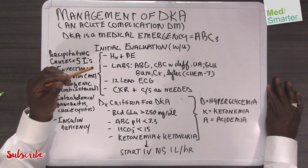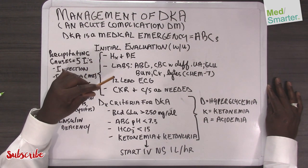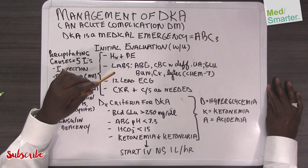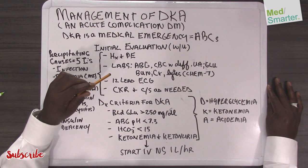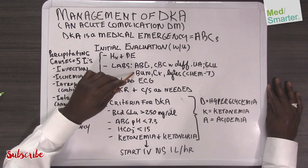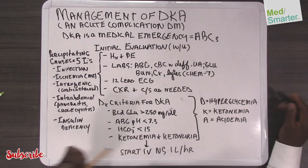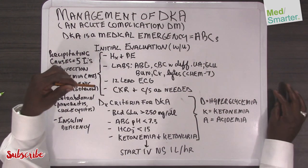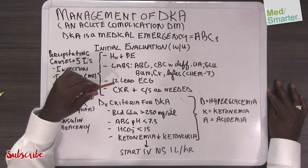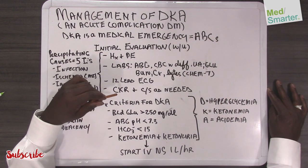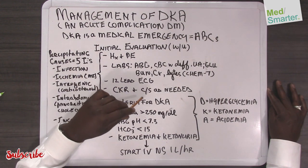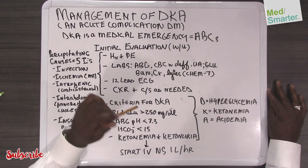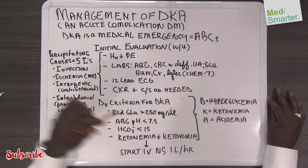Your labs are going to include your ABG, a CBC with differential, your urinalysis, glucose, BUN, creatinine and electrolytes or a CHEM7, a 12-lead EKG, chest x-ray, and culture and sensitivities as needed.